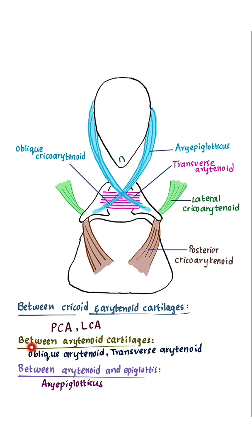Between the two arytenoid cartilages, there are two muscles: oblique arytenoid and transverse arytenoid. Between the arytenoid cartilage and the epiglottis, there is the aryepiglotticus muscle.